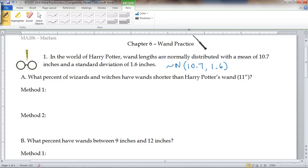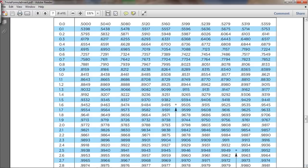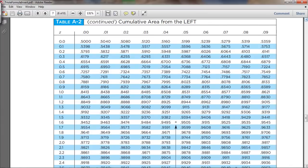First thing I'm going to do is talk about method 1. Method 1 uses the z-score and the tables. So first thing you want to do is calculate the z-score. So 11 minus 10.7 divided by 1.6 gives us 0.1875. Now look on the table and try to find the z-score of 0.1875.